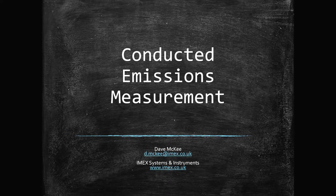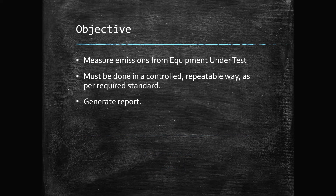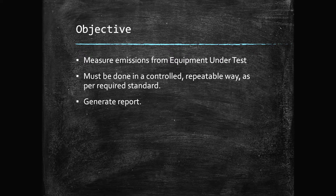Today we're going to talk about conducted emissions measurement, part of your normal EMC test requirement. This is one of the easier ones to do. The objective is obviously to measure the emissions coming from your equipment, but it needs to be done in a controlled and repeatable way as per your required standard, with the output being whatever debug is required and hopefully a report showing the product meets the required standard.